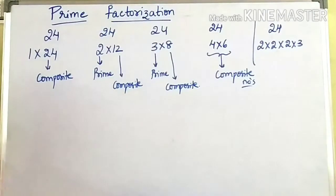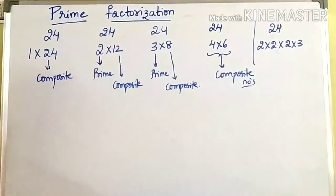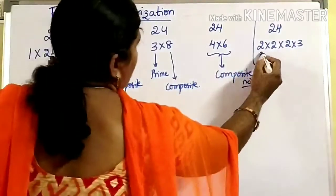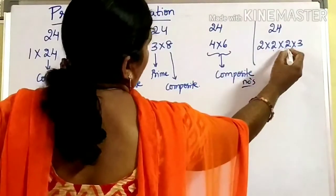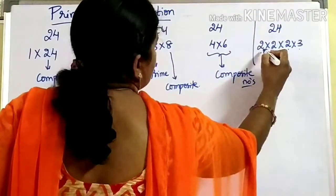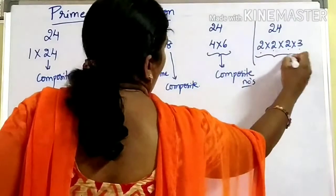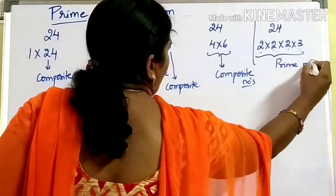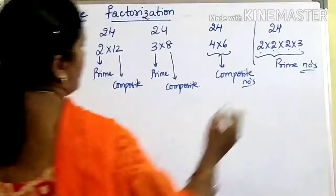Now, 24 can be written as 2 into 2 into 2 into 3. If you consider that, all the factors are prime numbers. Here, 2 is a prime number, 2 is a prime number, 2 is a prime number, and 3 is a prime number. All the numbers — 2, 2, 2, 3 — are prime numbers.